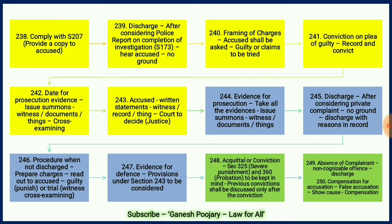The police report path starts from the section 207 reference, giving the copy to the accused as per section 238. The court then checks for sufficient grounds: if insufficient, it discharges under section 239; if sufficient, it frames charges under section 240 and asks the accused. If the accused agrees to plead guilty, conviction on plea of guilty is recorded under section 241. If not, section 242 applies — giving the date for prosecution evidence, issuing summons for witnesses, documents, and things, and allowing cross-examination.